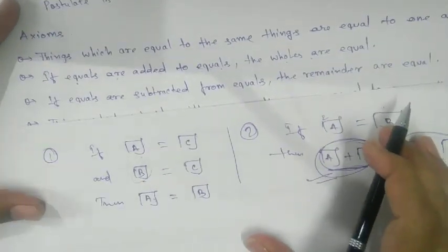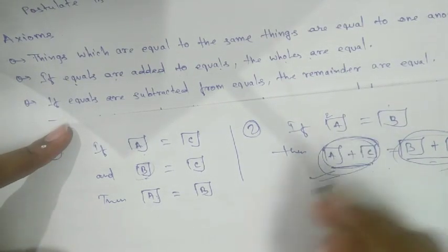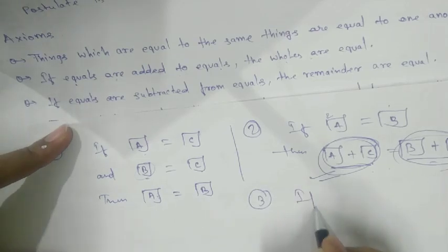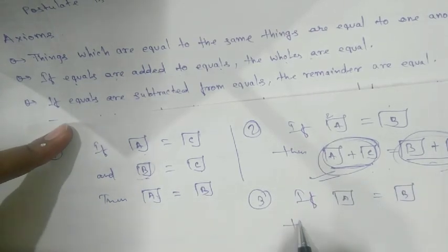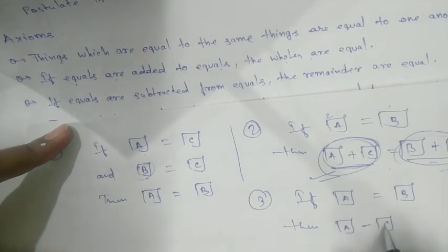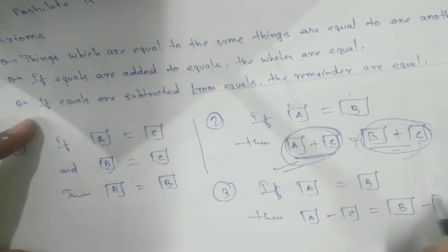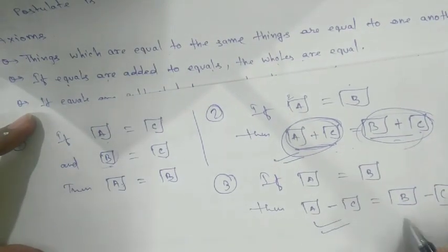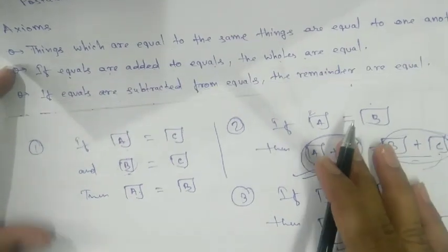Axiom 3: If equals are subtracted from equals, the remainders are equal. This is the opposite of the previous one. If A equals B and we subtract the same amount C from both sides, the remainder will remain the same.